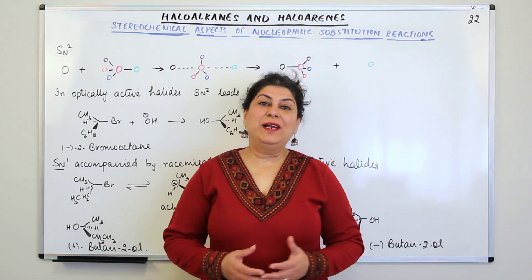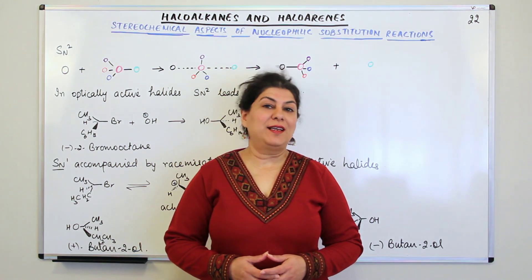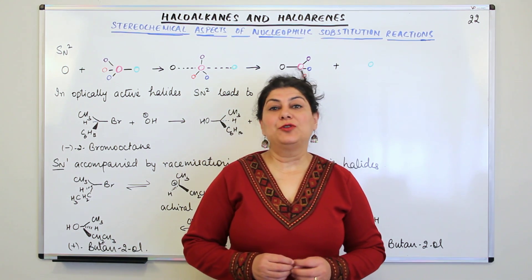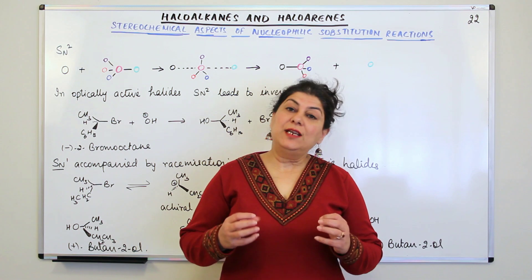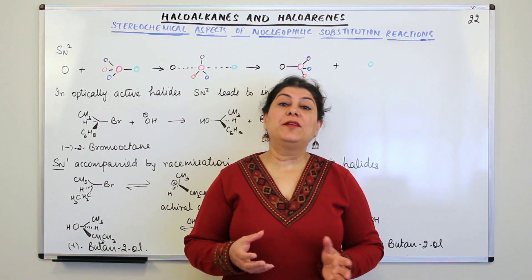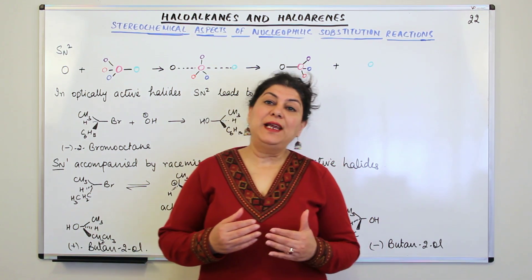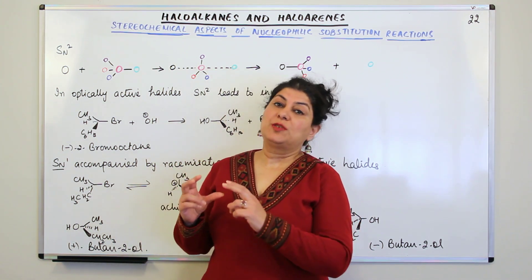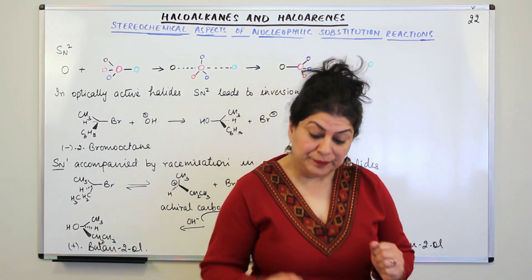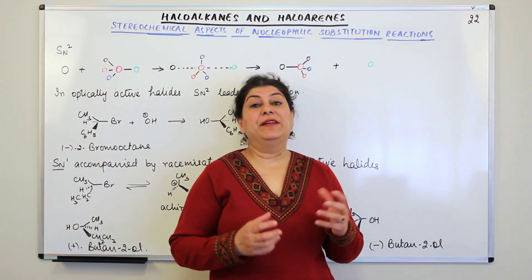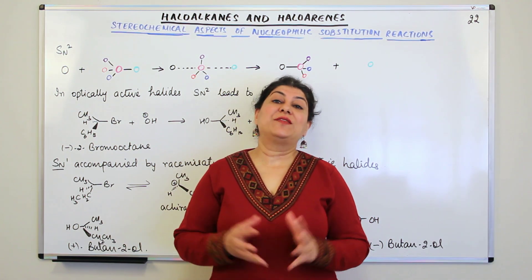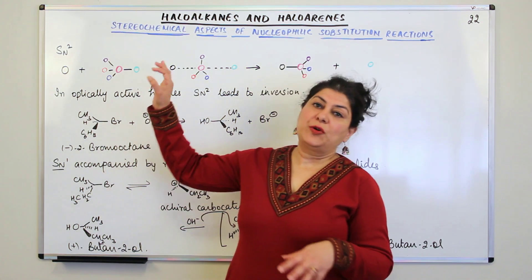Hello, I am Seema and welcome to part 22 of the chapter haloalkanes and haloarenes. In the past few videos we have been discussing the nucleophilic substitution reactions of haloalkanes, and in order to understand the mechanism and why the products are formed, we needed to understand the stereochemical aspects. I have been explaining plane polarized light, optical activity, enantiomers, molecular asymmetry, chirality, inversion of configuration, retention of configuration, and racemization. You have now understood all the stereochemical aspects.